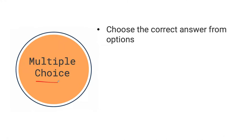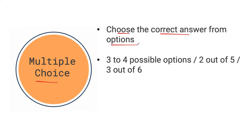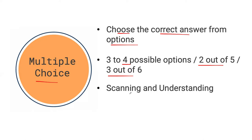This question type is going to ask you to choose the correct answer from a list of options, and most often you're going to have three to four possible options. Four is the most common you'll see on the IELTS exam, but sometimes you might be asked to pick two out of five options or three out of six. These are a little bit rare but they do happen. Our example today is looking at four possible options, and we're going to use scanning and skim reading because you need to find keywords in order to understand where the information is located in the passage and then understand what is written about that keyword.